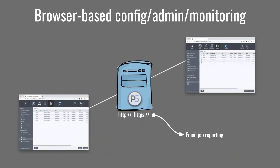One of the things that makes P5 easy to use is that it's browser-based for configuration, administration, and monitoring. You do everything in the browser — you can do it remotely from home. You can use HTTP or HTTPS, and you can also get job emails to tell you what P5 has been doing, whether someone's been restoring or archiving something.